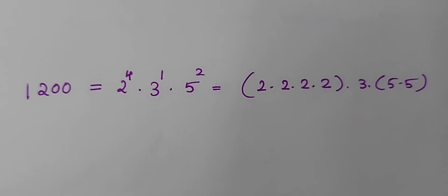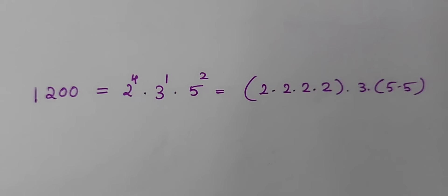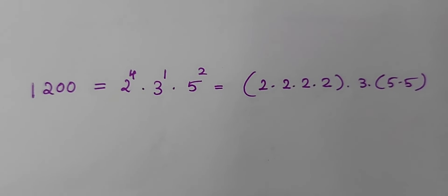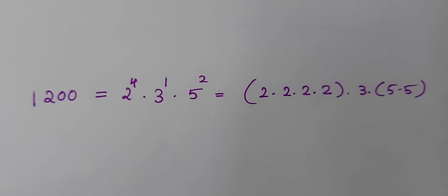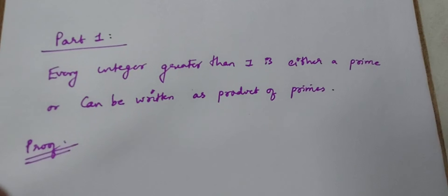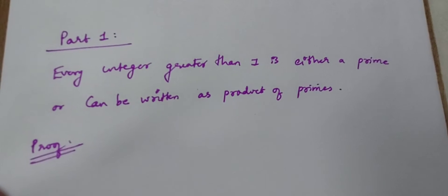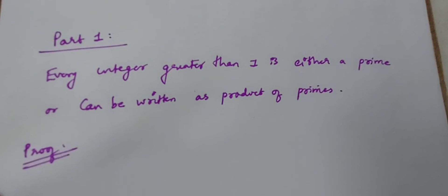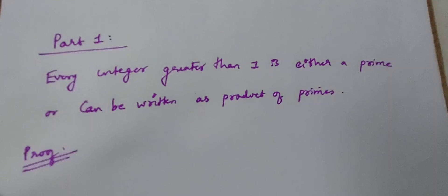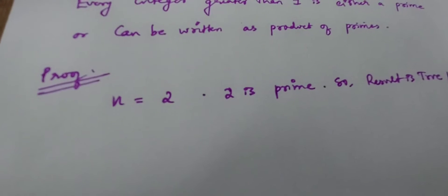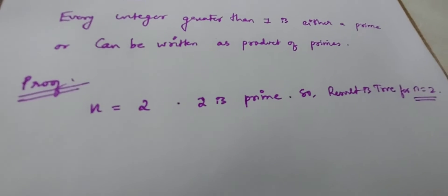So the fundamental theorem of arithmetic says that every number greater than 1 can be expressed as a product of primes, and it can be expressed uniquely. Now let's prove the fundamental theorem of arithmetic. Let's prove the existence part, which says that every integer greater than 1 can be prime factorized — meaning every integer greater than 1 is either a prime number or can be written as a product of prime numbers.